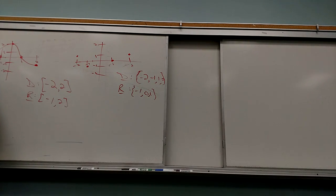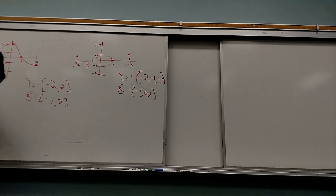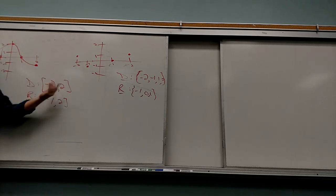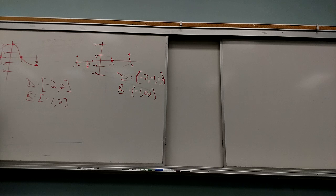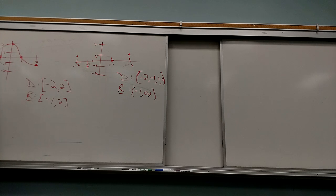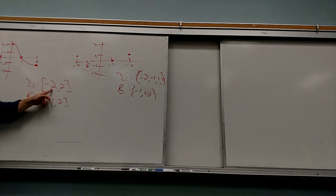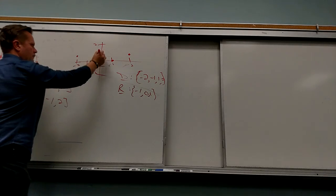So all the problems on that section that have just dots — not connected — the domain and range is going to look like that. Because they're very specific. Why can I use an interval for the connected one? Because it's connected. Therefore everything in the middle actually has an output. Here I have to list individual values because they're just little points — they're not connected. Domain is always all the X-values that actually have an output.